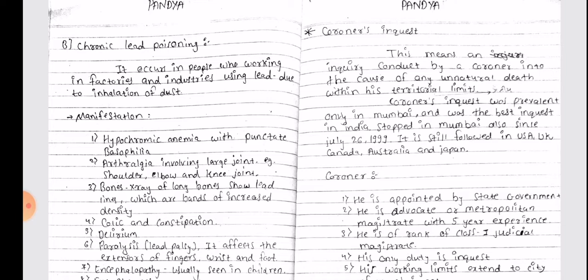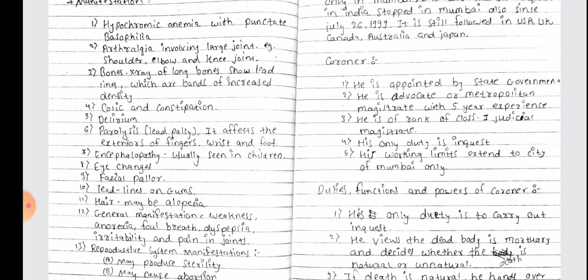Coroner's Inquest was prevalent only in Mumbai and was the best inquest in India, but stopped in Mumbai also since July 26, 1999. It is still followed in USA, UK, Canada, Australia and Japan.